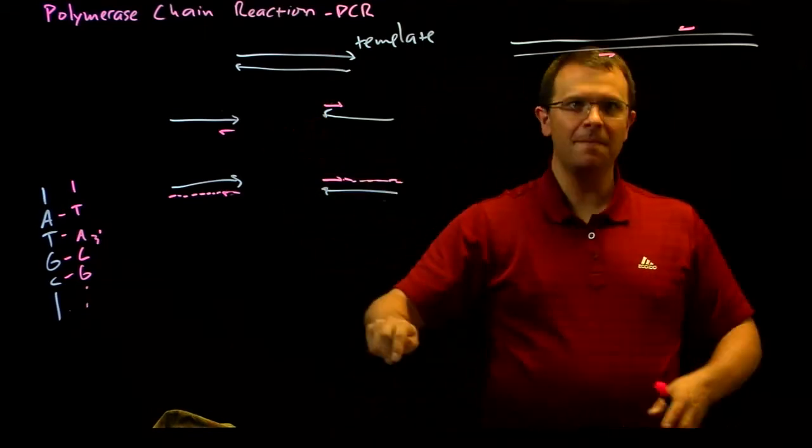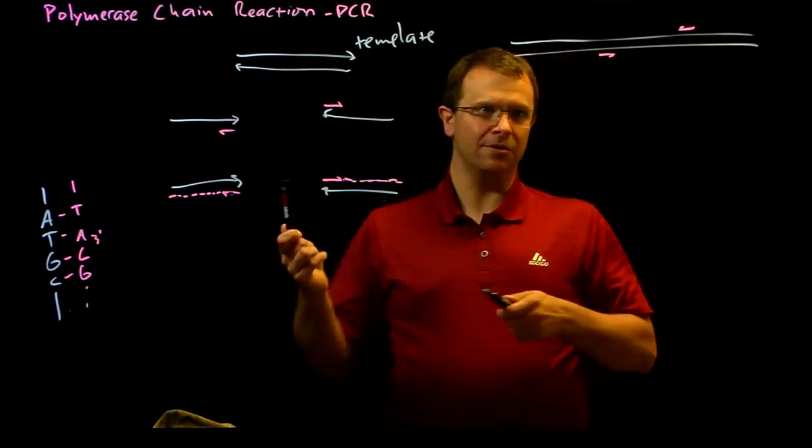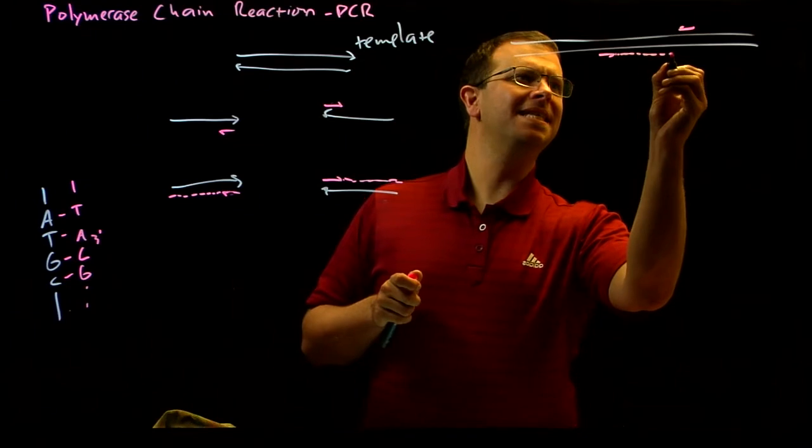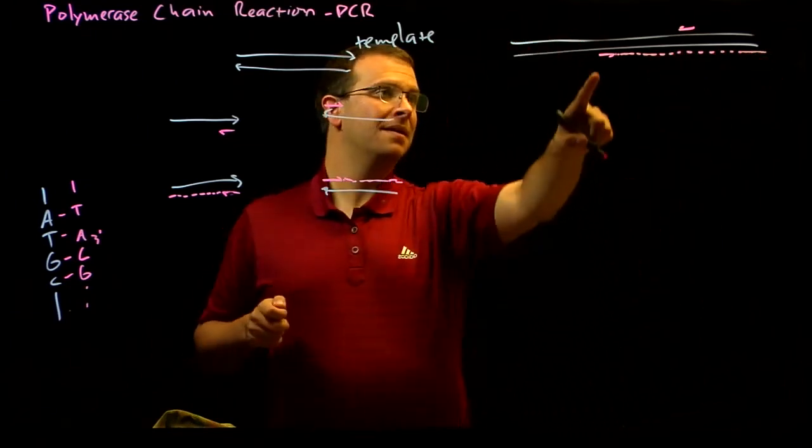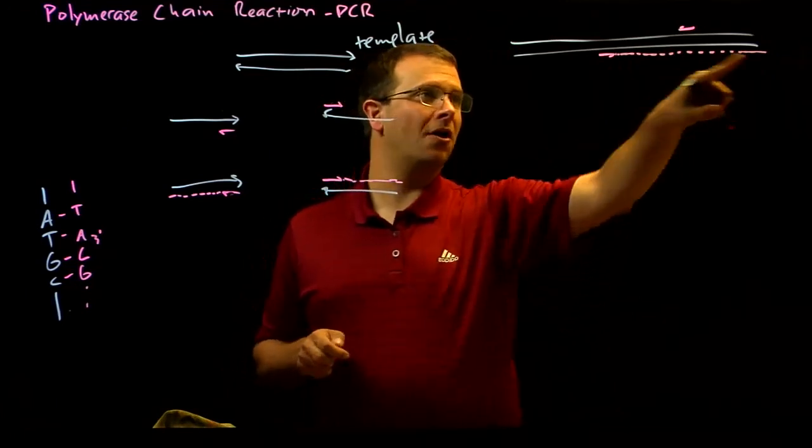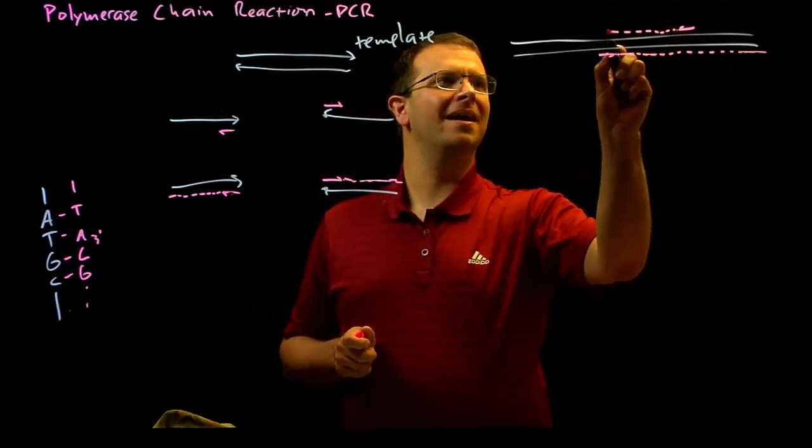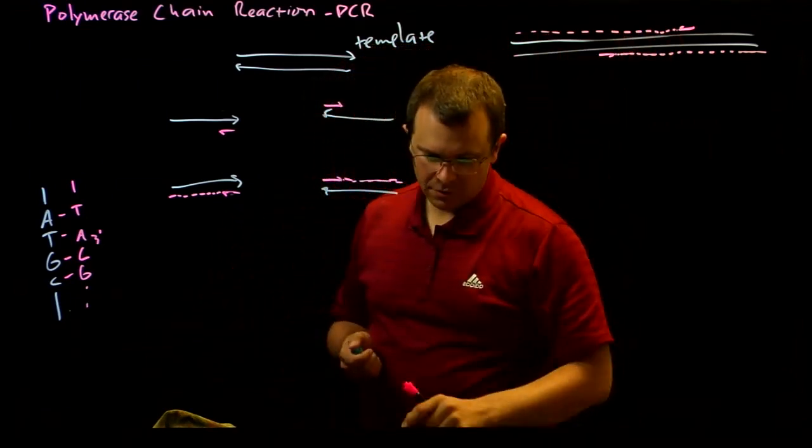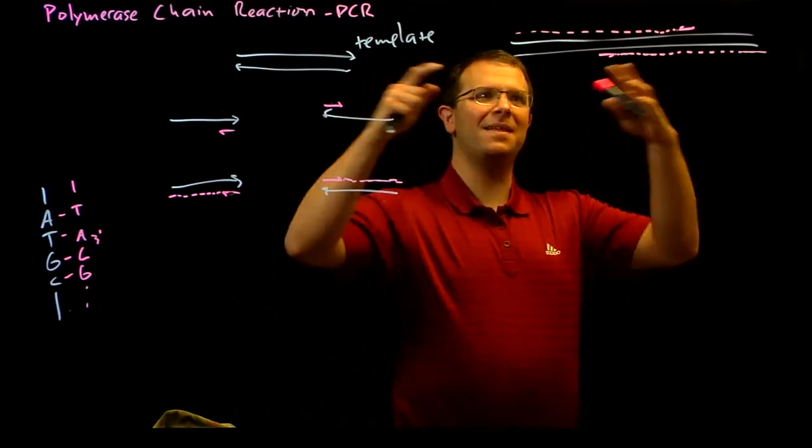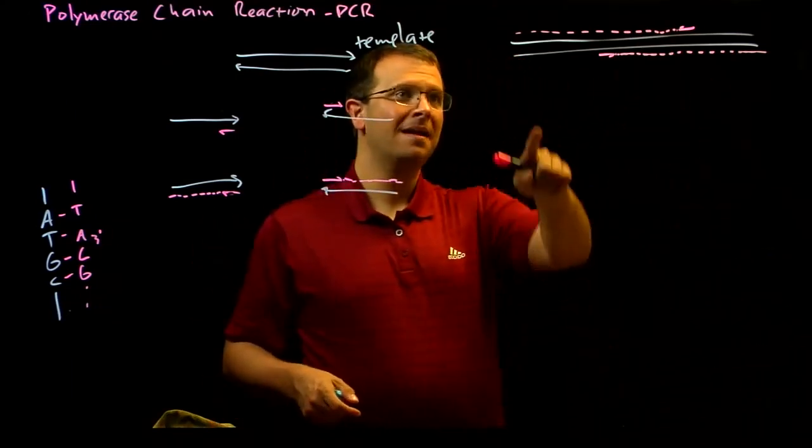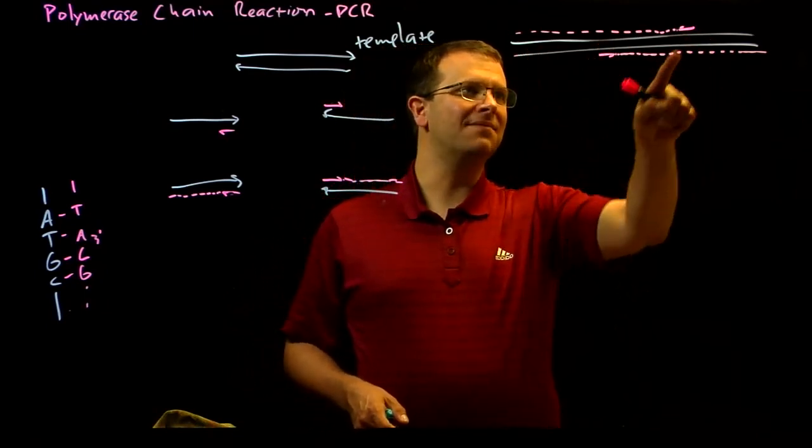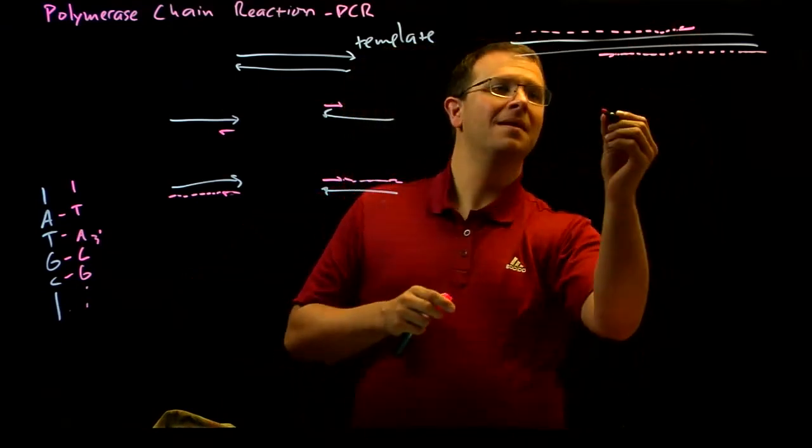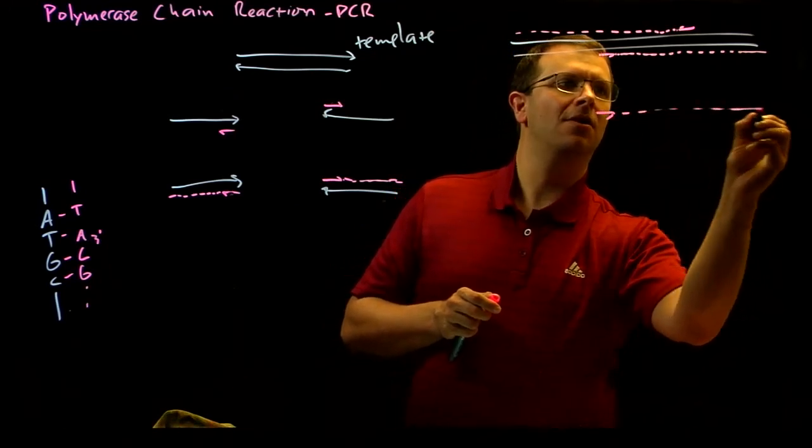So, if I start with a long double-stranded piece of DNA and I design primers that land here and here, I do my melt step and then I allow my primers to anneal and then extend. And so, against this one, the first extension happens here and probably continues on past that first primer. The second time, the extension probably continues on past this primer.